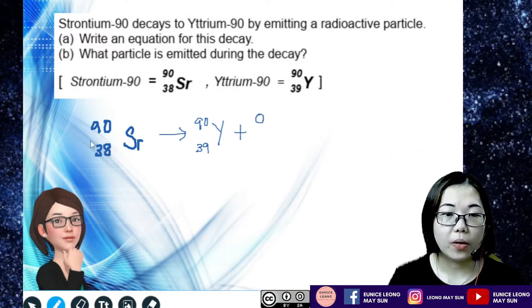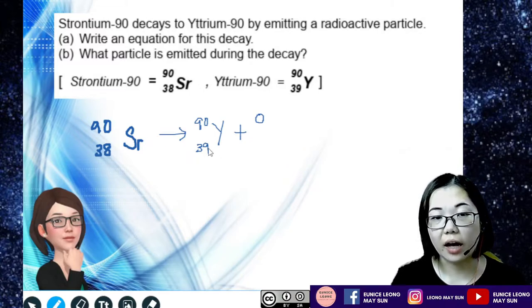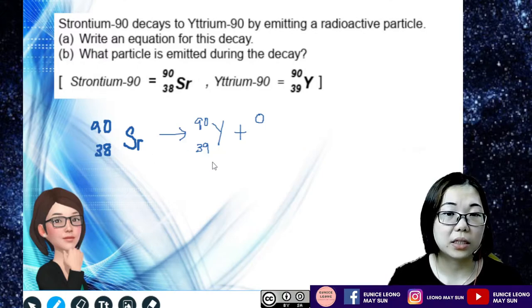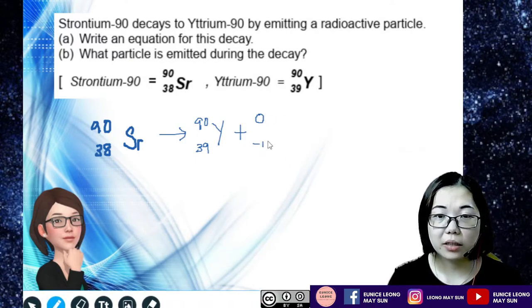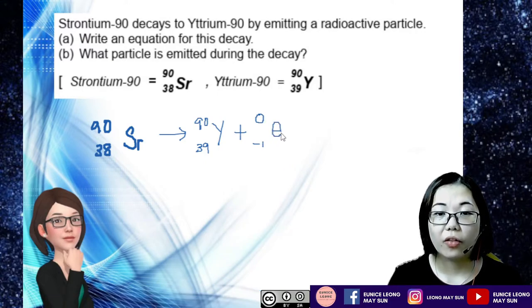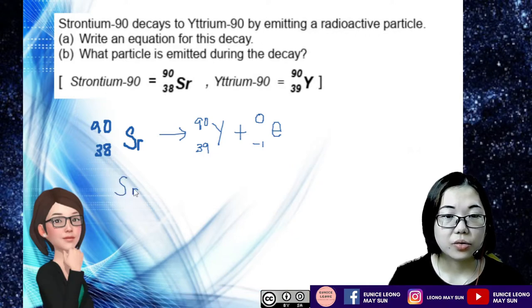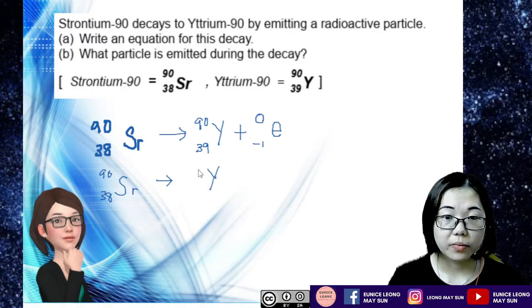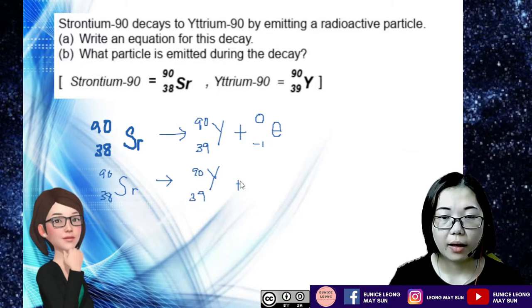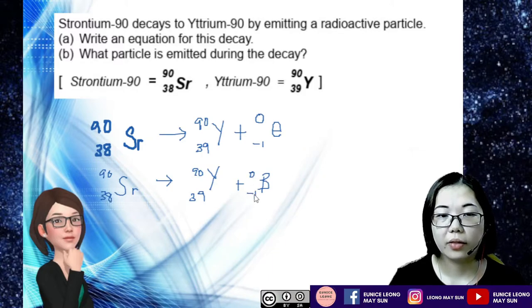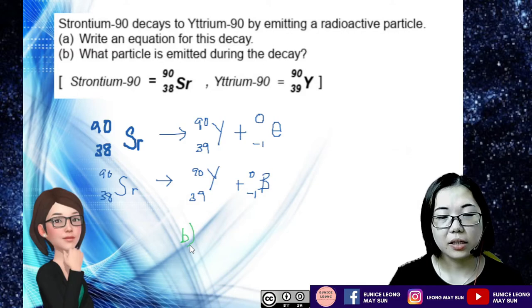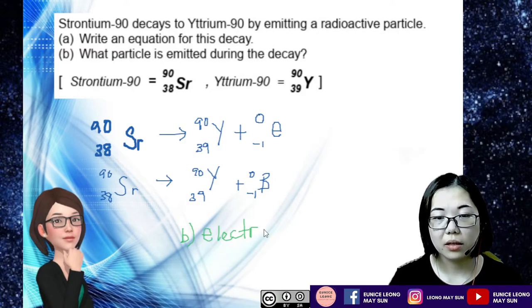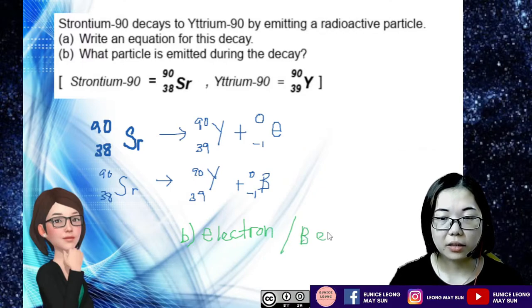For the proton number: before decay it's 38, after decay it's 39 — so it's unbalanced. In order to balance the proton number, I need a negative 1 here. A radioactive particle with nuclear number 0 and proton number negative 1 is an electron. Or you can write it as strontium-90,38 becomes yttrium-90,39 plus beta particle zero,negative-1.